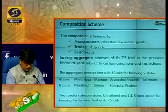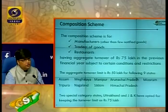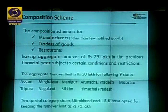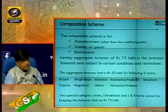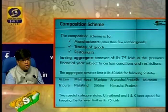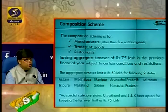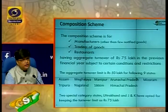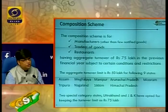The composition scheme can be availed by a manufacturer (excluding a small category), a trader, and within services, only a restaurant. The turnover limit in the last financial year is 75 lakhs — if your turnover was 75 lakhs or less in the last financial year, you are eligible. There are certain additional conditions and restrictions to avail this scheme besides this threshold.